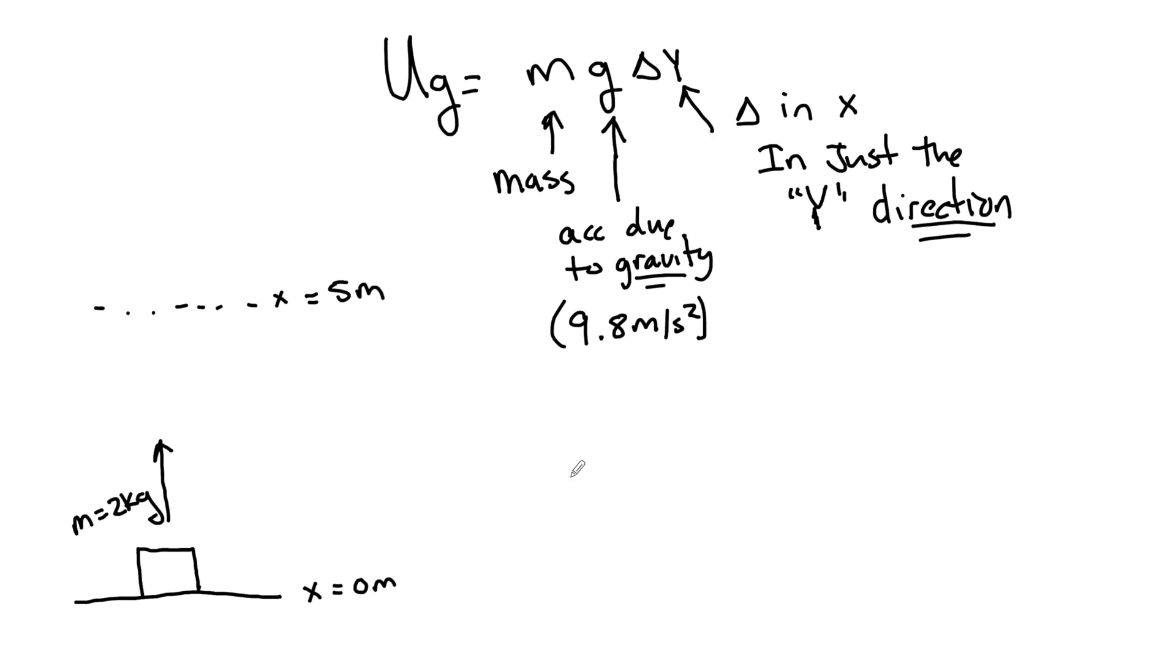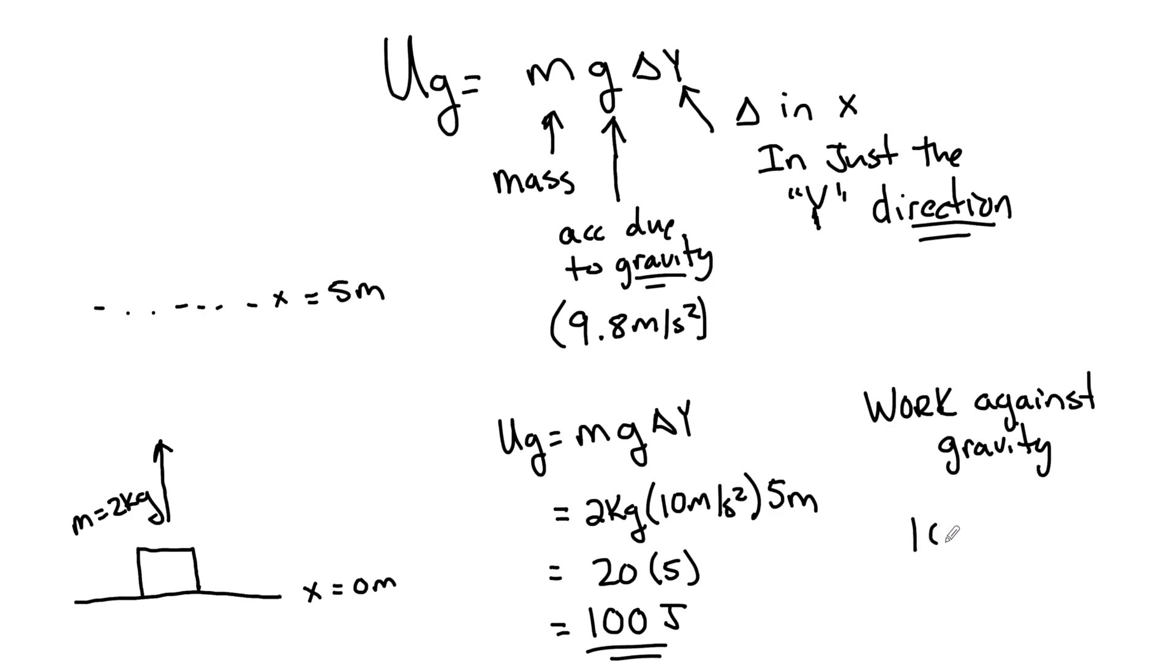So here's what we're going to say. We are going to say that U_G equals M, G, delta Y. We're going to substitute in with our units, 2 kilograms times 10 meters per second squared, and X is going to be equal to 5 meters. So we have 20 times 5. We say right now that at that height, this object has 100 joules of potential energy. But we also say that the work done against gravity is equal to 100 joules.